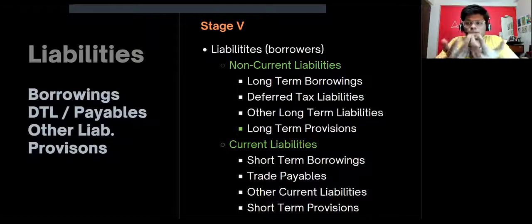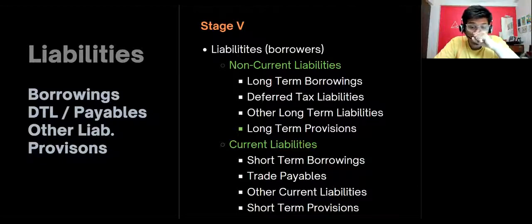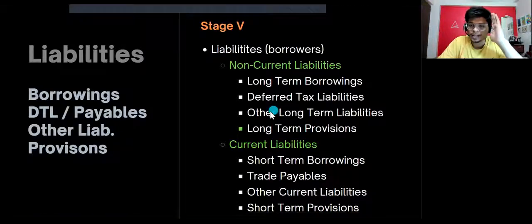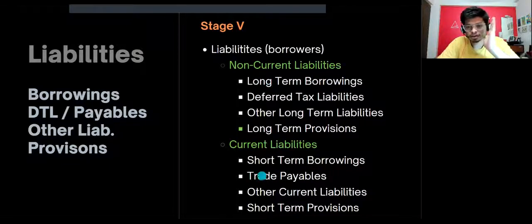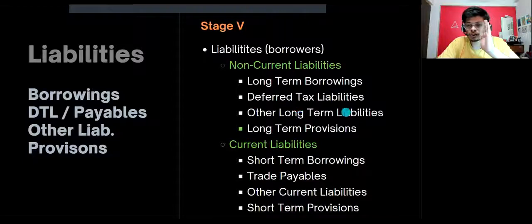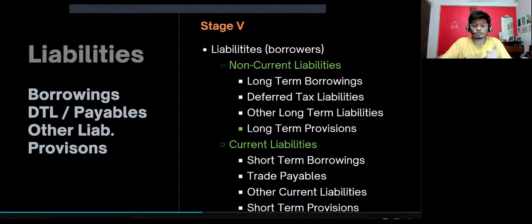A provision is basically something the company provides for — a future possible expense it is setting aside money for right now. So to summarize: long-term borrowing, short-term borrowing, deferred tax liability, trade payables, other long-term and current liabilities, long-term provisions and short-term provisions. Now let's move on to the asset side.